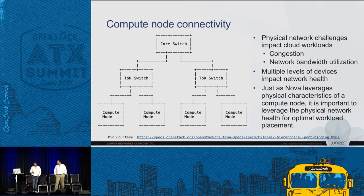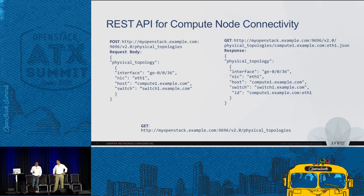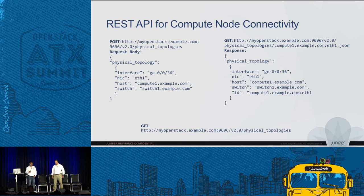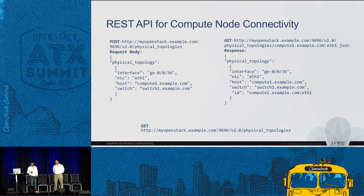Hello everyone, I am Chandan and I'll take you through the solution we have implemented. The first part of the problem is making OpenStack aware of physical network connectivity. To solve this, we introduced an extension to Neutron. With this extension, we can store and retrieve physical network connectivity links in Neutron. There are two ways of retrieving this information: one retrieves the whole set of topology and connectivity information in one shot, and the other queries one endpoint at a time to get the link state.